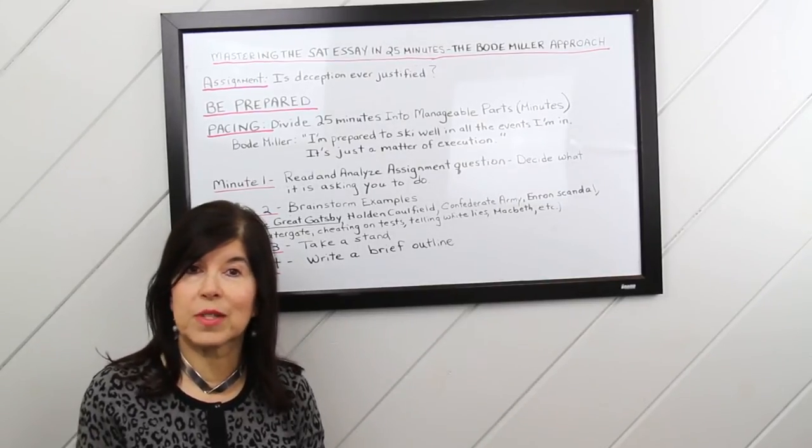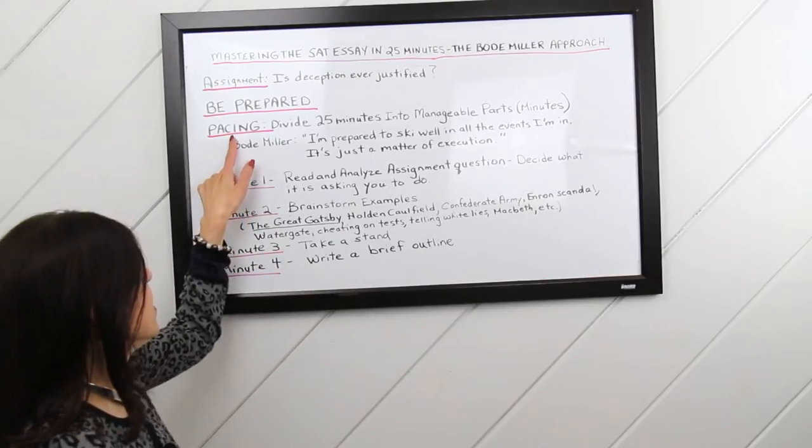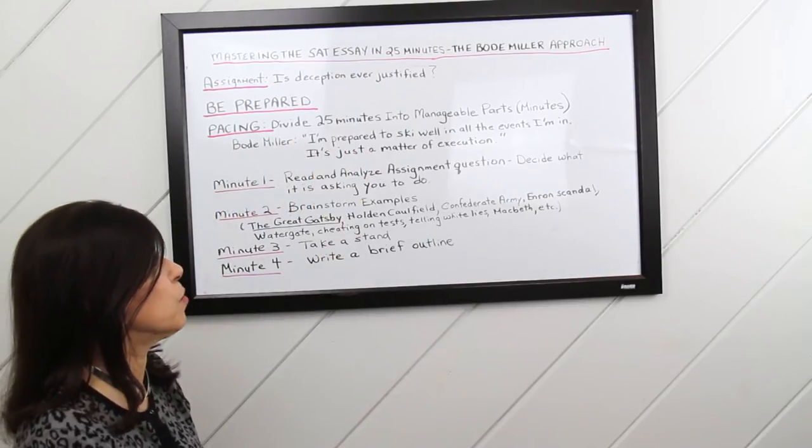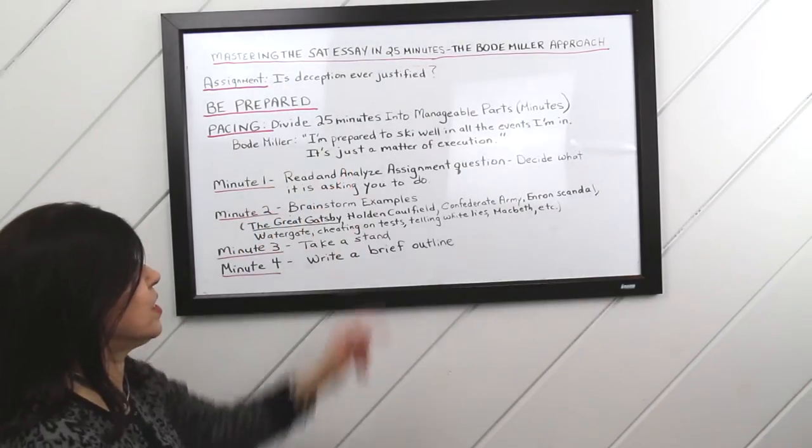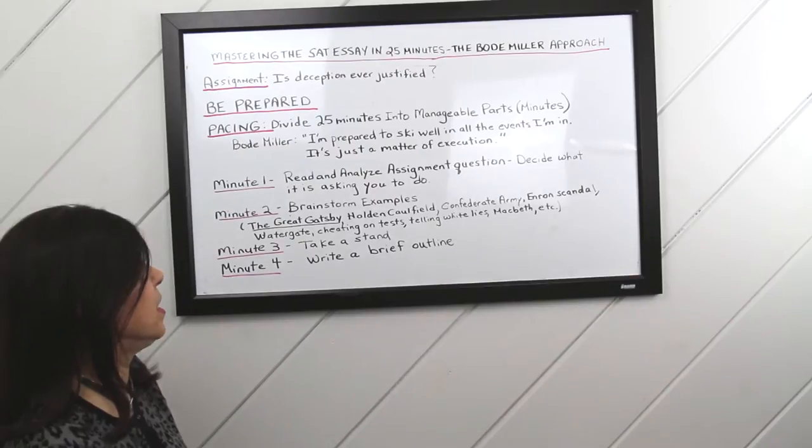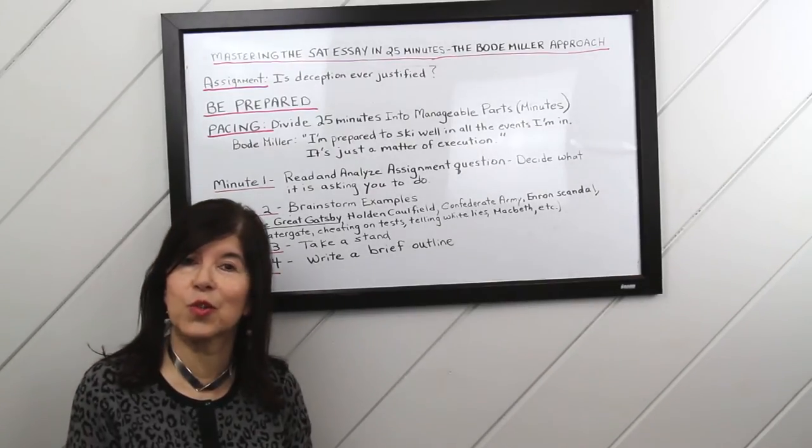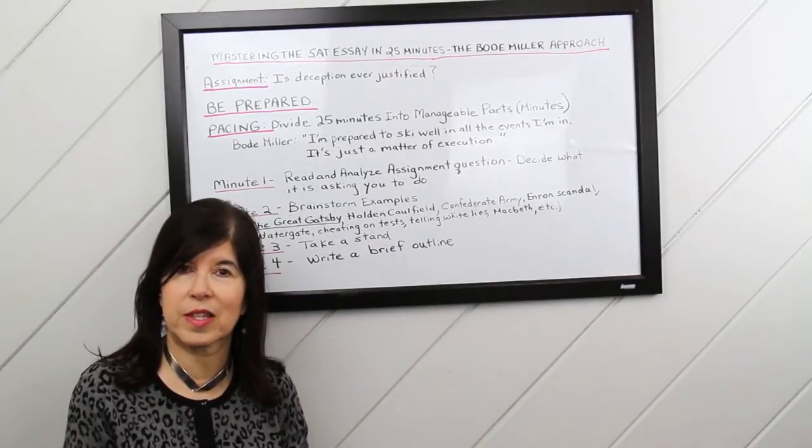The next huge time saver is pacing. We're going to divide 25 minutes into manageable parts or minutes. Bode Miller says, I'm prepared to ski well in all the events I'm in. It's just a matter of execution. Well, let's work on your execution so you're prepared to write a high-scoring essay.